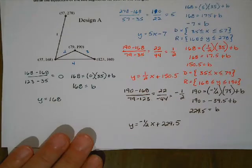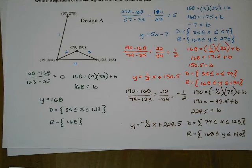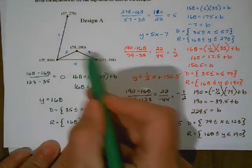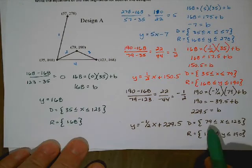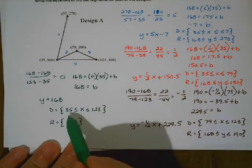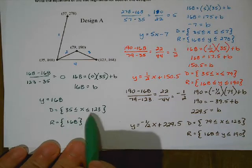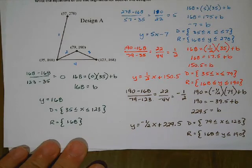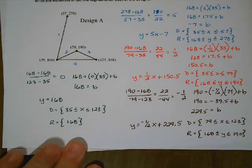Go ahead and do line 3 and 4 on your own. For line 3, going from (79, 190) to (123, 168): domain is 79 less than or equal to x, less than or equal to 123. Range is 168 less than or equal to y, less than or equal to 190. For line 4, domain values went from 35 to 123: 35 less than or equal to x, less than or equal to 123. The range was interesting — there's only one possible range value, 168. So the range is just y equals 168.